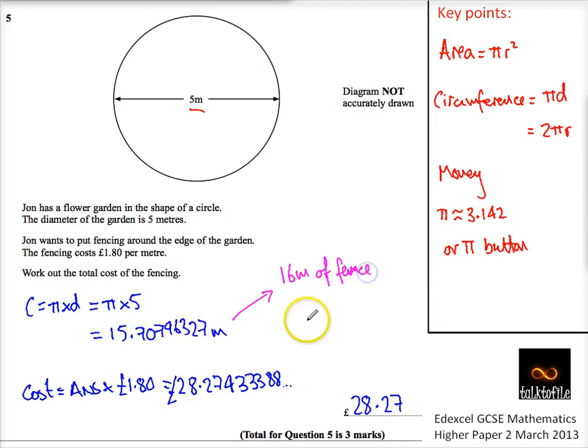So therefore, you're going to do 16 times £1.80. And if we do that, 16 times £1.80, then you get £28.8 exactly. That is also an acceptable answer. So this is an alternative.